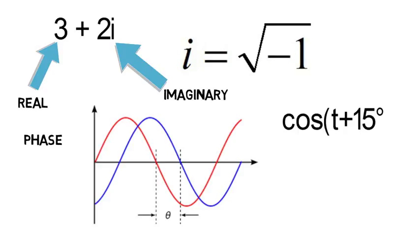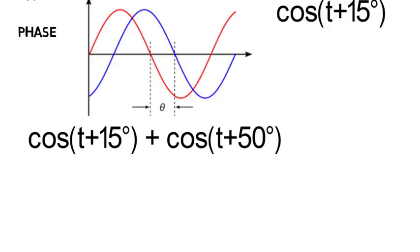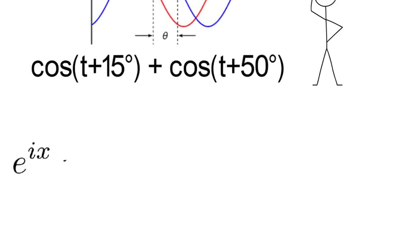But what happens when you want to add two trig functions of different phases? Now complex numbers come in. But why do they come in? And it's because of this equation right here. This is Euler's formula and this is basically the start of complex analysis and it's one of the most important and famous equations you need to know.